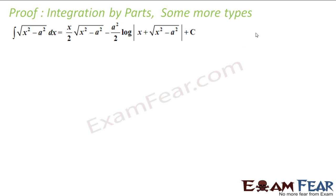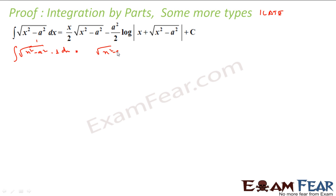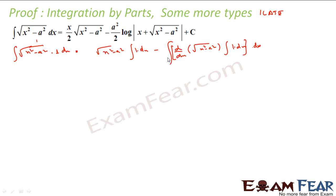Let's assume I = ∫√(x²−a²)·1 dx. Using integration by parts (ILATE), I take √(x²−a²) as the first function. This becomes: √(x²−a²)·∫1 dx − ∫[d/dx(√(x²−a²))·∫1 dx] dx.